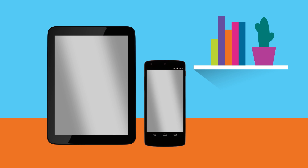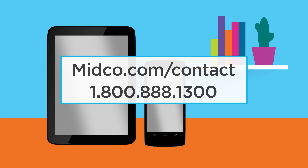Got a new mobile phone or tablet? Here's how to set up your Midco email manually using the Android operating system. Steps may vary depending on your phone's make and model as well as your chosen mobile phone network provider. If you have questions, please reach out to us at midco.com/contact or 1-800-888-1300.